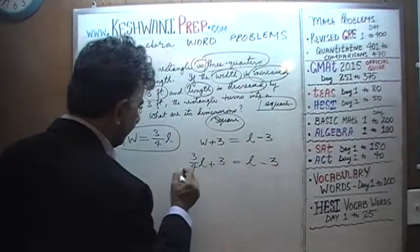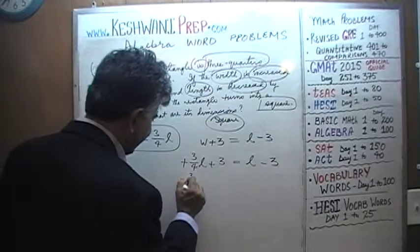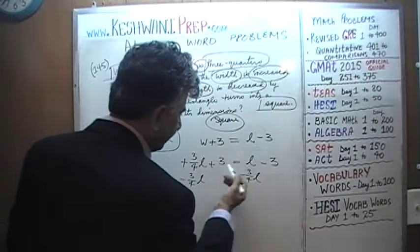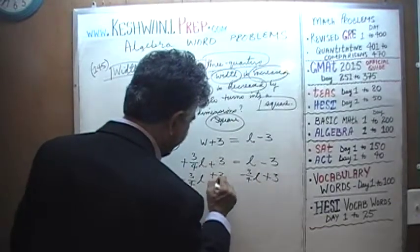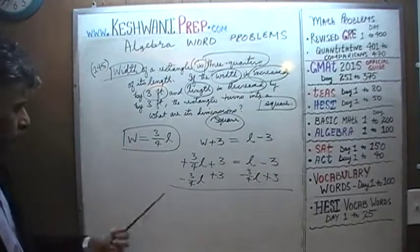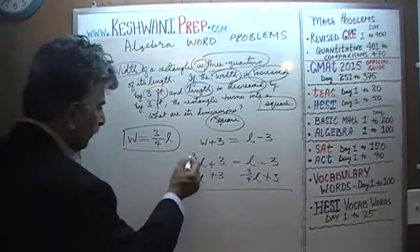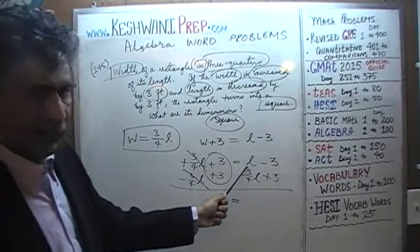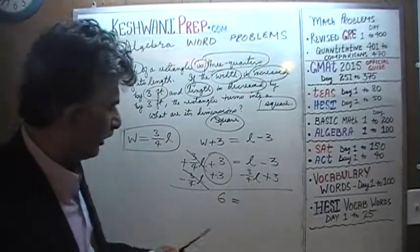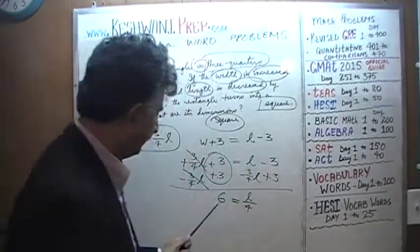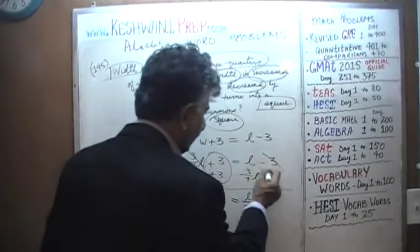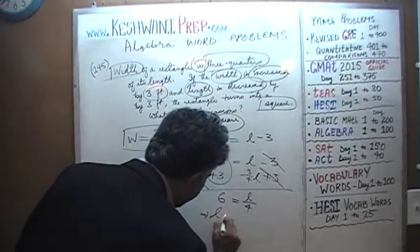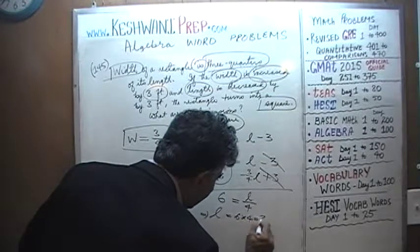Let's subtract 3 quarters of the length from both sides, and bring the 3 to the other side by adding 3 to both sides. Positive 3 quarters L and negative 3 quarters L cancel out. 3 plus 3 is 6. We have 1L minus 3 quarters L, which is one quarter L. So one quarter of the length equals 6. If a quarter of the length equals 6, that implies the length must be 6 times 4, or 24.